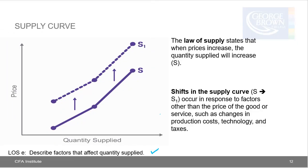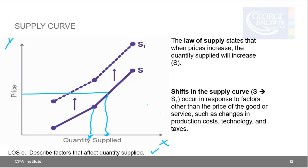Moving on to learning outcome statement E: describe factors that affect quantity supplied. The supply curve represents quantities supplied at different prices and is upward sloping. As price increases, quantity supplied also increases — there's a positive relationship. The law of supply states that when prices increase, the quantity supplied will increase. Shifts in the supply curve — moving from S to S1 — occur in response to factors other than price, such as changes in production costs, technology, and taxes. For example, if production costs decrease, that would shift the supply curve and increase quantity supplied at each price.